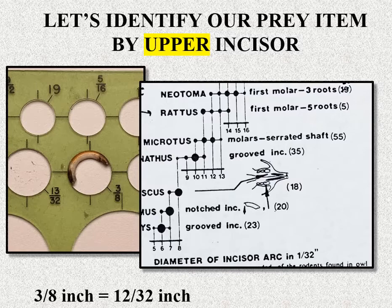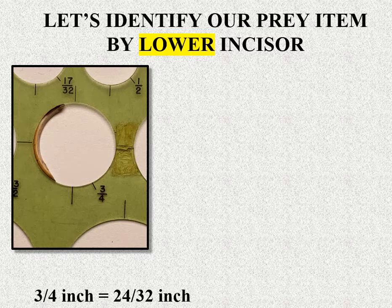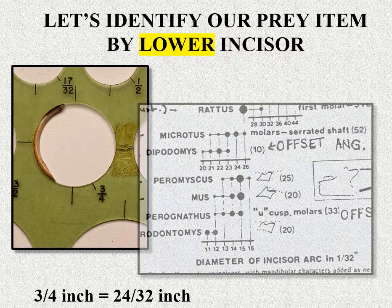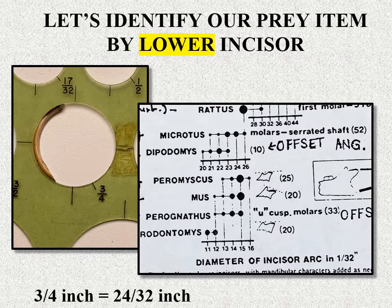Looking at that, the molars are quite distinct and different. It turns out these molars were serrated, so it would be a meadow mouse — a microtus. Here's the lower incisor: it's 24/32 of an inch. Look at the key — what does it say the species would be? It turns out there's only one species that has 24/32 arcs of lower incisors, and that's a microtus. So they both agree. Isn't that neat?